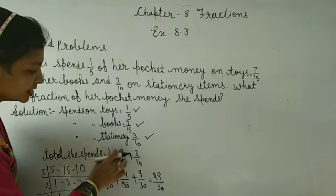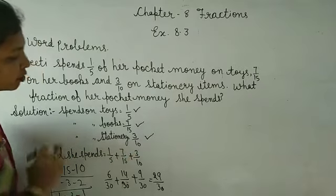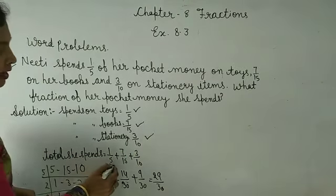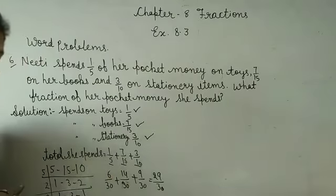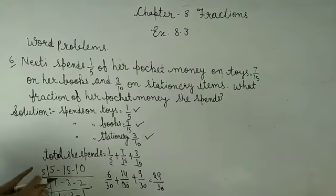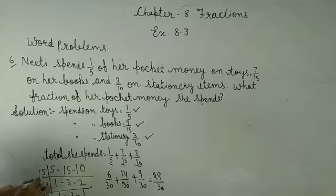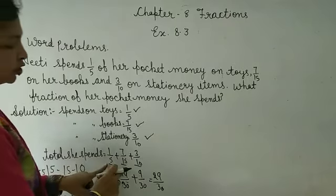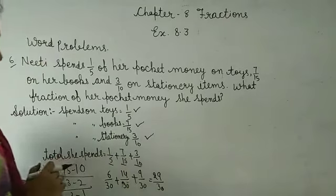We need to add all three: 1 upon 5 plus 7 upon 15 plus 3 upon 10. First we need to make all three denominators the same. How? Take LCM of 5, 15, and 10. The LCM is 30. Now we need to convert all three fractions to denominator 30.